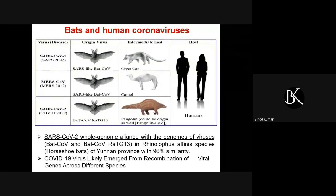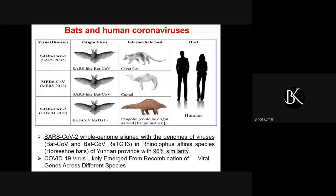We are not very sure — there could be other intermediate hosts too, maybe ones we haven't discovered yet. We only know the outbreak originated from a seafood market and pangolins are illegally sold there. There could be other animals whose meat was sold in those markets and somehow the virus got transmitted to humans.